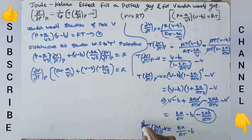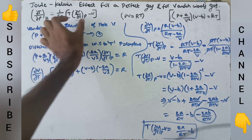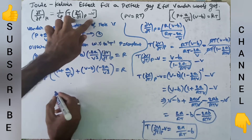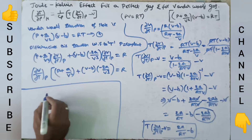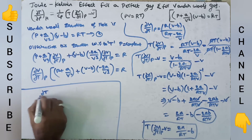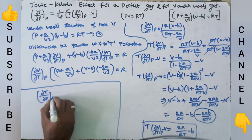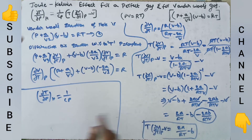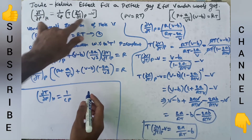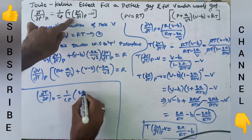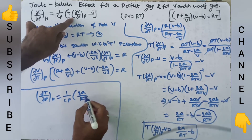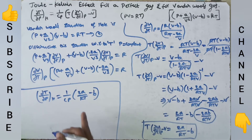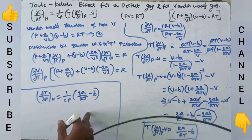Substituting this entire term into the Joule-Kelvin coefficient expression, we get ∂T/∂P at constant H = (1/Cp)·[2A/(RT) - B]. This is the Joule-Kelvin effect for Van der Waals gases.